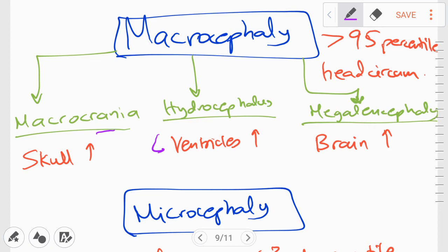For example, in the neurocutaneous disorders like neurofibromatosis or neurodegenerative disorders like sphingolipidosis, we can have abnormal accumulation and we can then have increased brain size. To make sure the macrocephaly is not physiologic, it's always good to plot the head circumference on a growth chart.